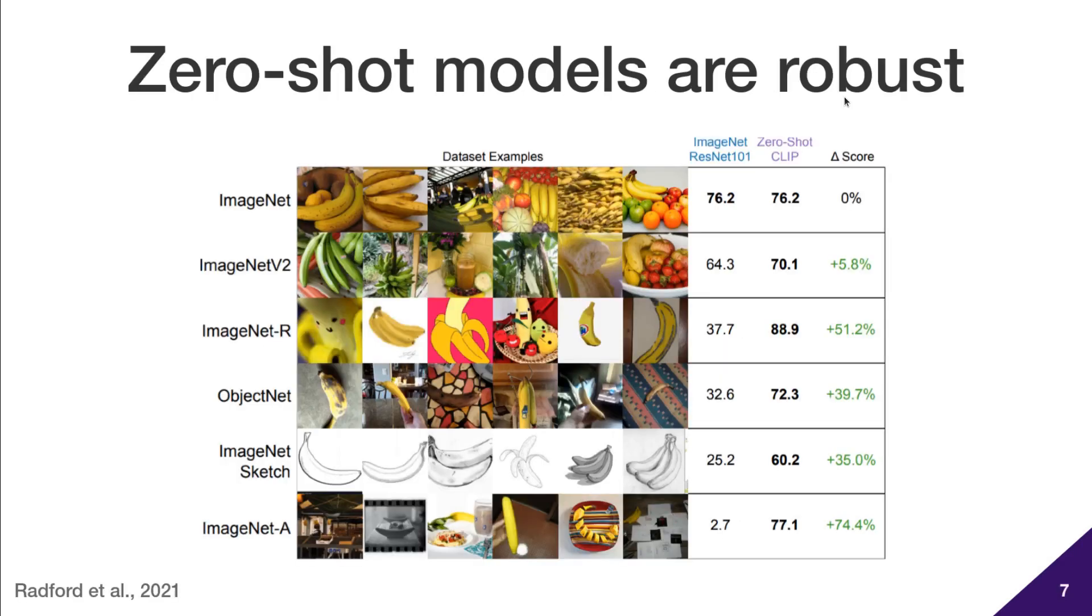One of the most effective ways of avoiding these accuracy drops is to use zero-shot models, which are not trained explicitly on data from the target distribution. For instance, CLIP by Redford et al. has the same ImageNet accuracy as a ResNet 101 when evaluated in a zero-shot setting, but is 40 percentage points better at ObjectNet.